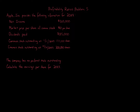Net income $310,000. Market price per share of common stock $60 per share. Dividends paid $185,000. Common stock outstanding at January 1st, 20x9: 155,000 shares. Common stock outstanding at December 31st, 20x9: 200,000 shares. The company has no preferred stock outstanding.